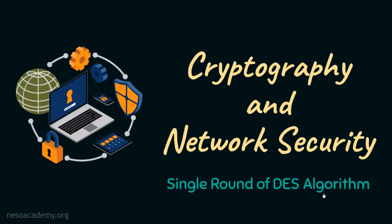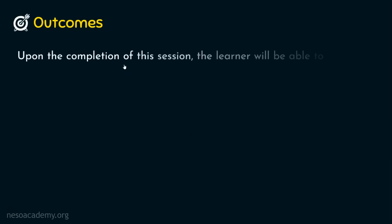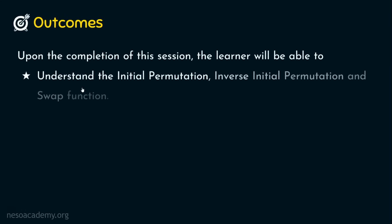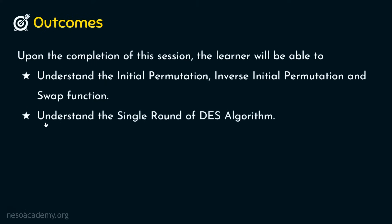Let's start the session with the outcomes. Upon completion of the session, the learner will be able to: Outcome one — understand the initial permutation, the inverse initial permutation, and the swap function. Outcome two — understand the single round of DES algorithm.